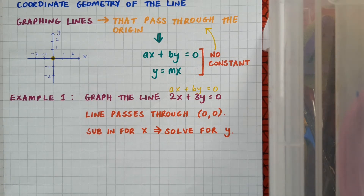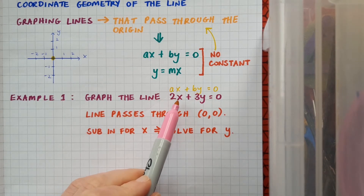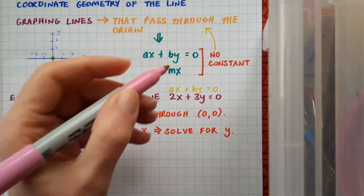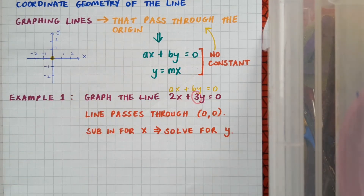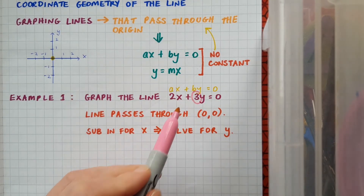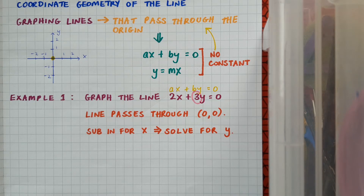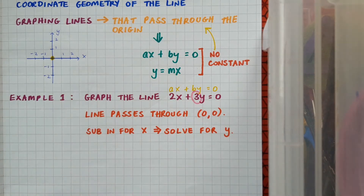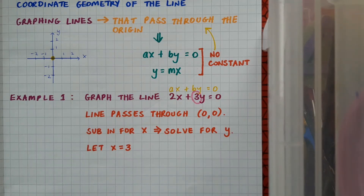To be guaranteed a nice whole number answer, go back to your equation and look at the coefficient of the other variable. The coefficient of y is 3, and if I substitute 3 in for x it'll give me a nice whole number answer for y. This isn't a hard and fast rule — I don't have to use this number — but by using it I'll get a nice answer out. So I'm going to let x equal 3 and substitute that in.